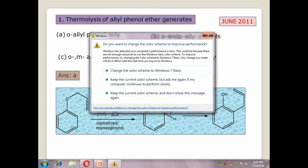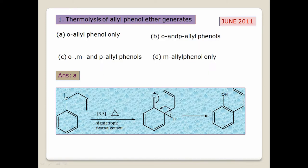Thermolysis of allyl phenyl ether — we take this compound and do a Claisen rearrangement, a 3,3-sigmatropic shift. After the 3,3-sigmatropic shift, hydrogen migrates and you get ortho-allyl phenol. Meta is not forming — you can eliminate the meta answer. Para is also not forming. So we are left with only ortho-allyl phenol. The right answer is A.